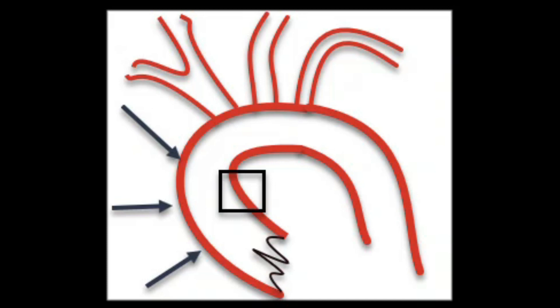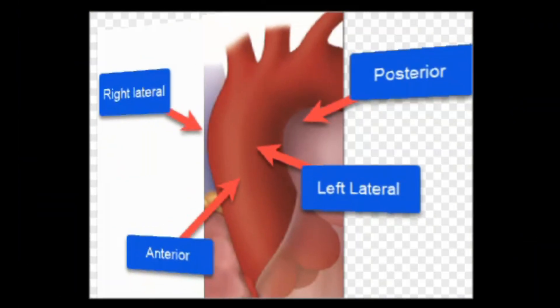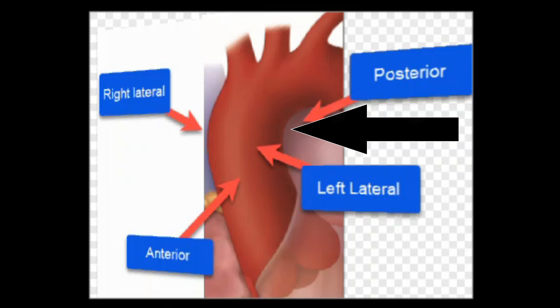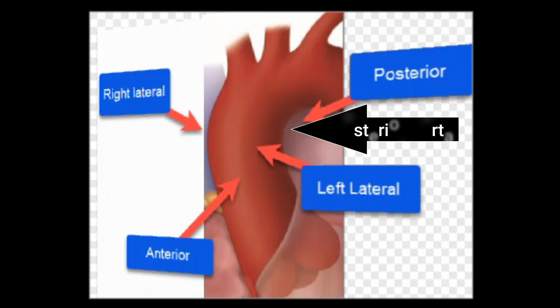Atheroma can be in the ascending aorta, arch, or descending aorta. Some authors define its position as anterior, posterior, left lateral, or right lateral in the ascending aorta. This understanding is important because we manipulate the aorta extensively during bypass surgery — specifically the ascending aorta, and more often the anterior, right lateral, and left lateral aspects. The posterior aspect is rarely manipulated except while placing the aortic cross clamp.